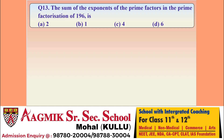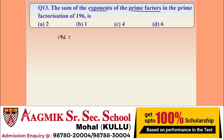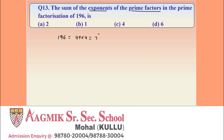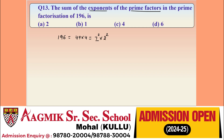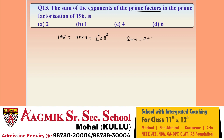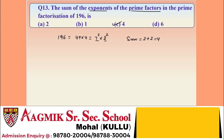Question 13: find the sum of exponents of prime factors in the prime factorization of 196. We have 196 = 49 × 4 = 7² × 2². Both 7 and 2 are prime numbers. The sum of exponents is 2 + 2 = 4. Option C is correct.